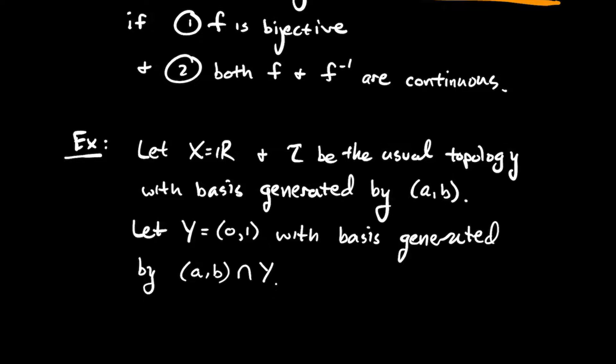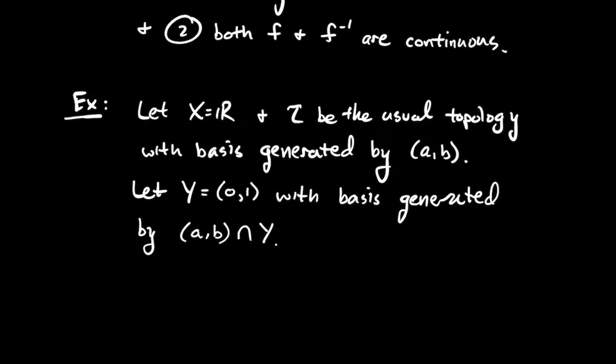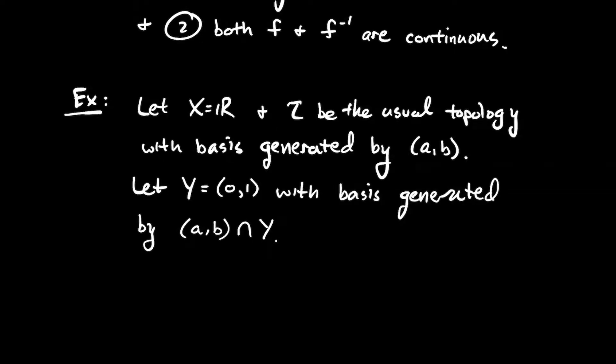Let's let Y be the interval 0 to 1 and let's let its topology be generated by all things of the form of an open interval from A to B, like on the real line, but you intersect that with the interval from 0 to 1. So you might recognize that as the subspace topology or the relative topology. So if something is open in Y, it is something that was open on the real line intersected with Y.